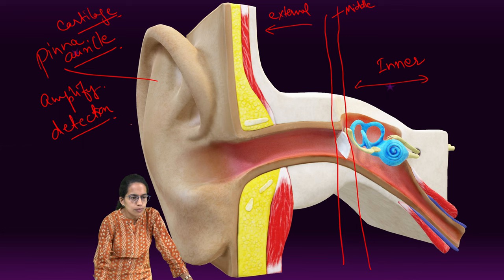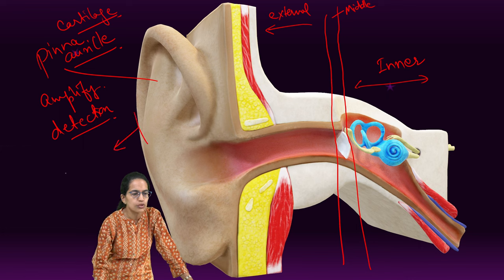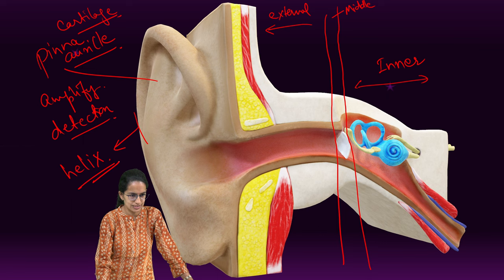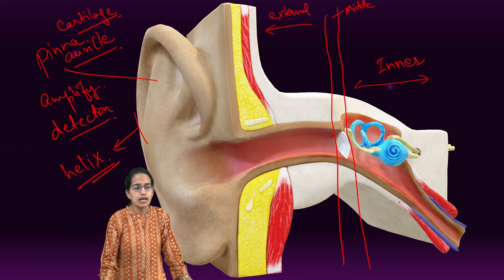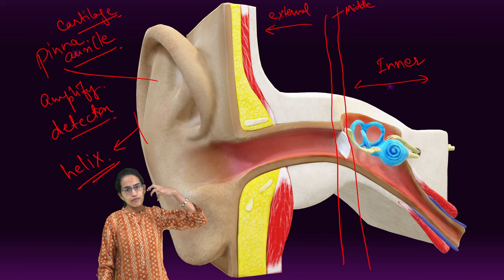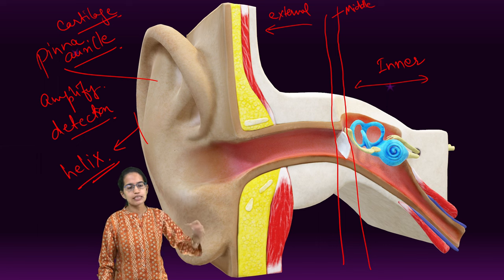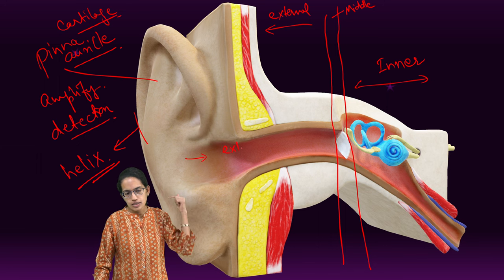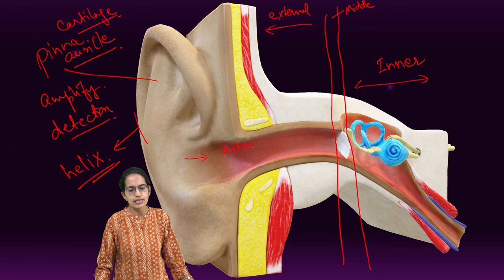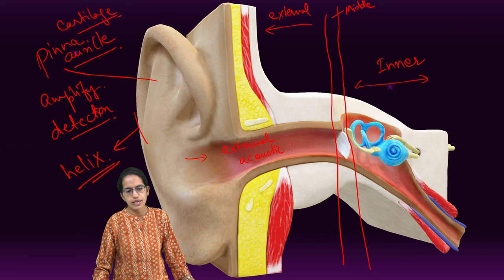The outermost boundary or the outermost ridge is what is known as the helix. This pinna amplifies the sound, detects the sound, and takes it to the canal that we can see inside our ear, which is known as the external acoustic meatus.